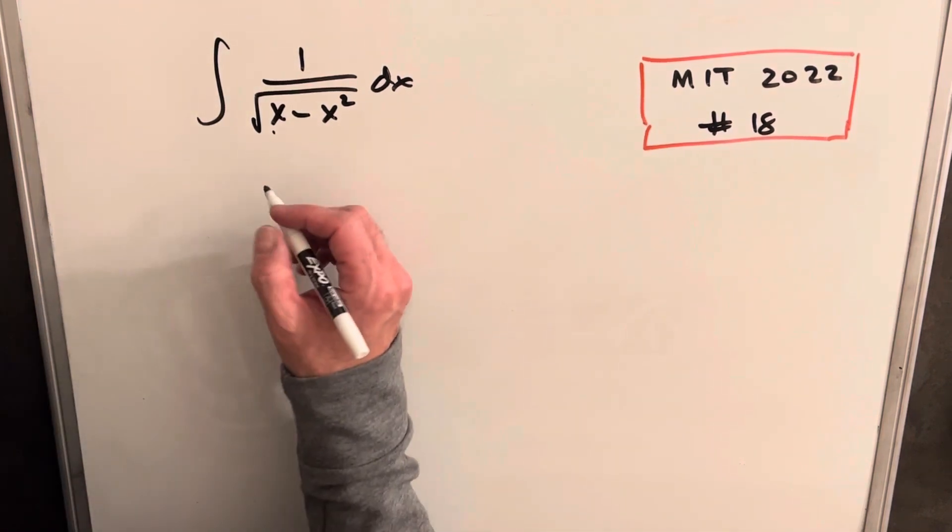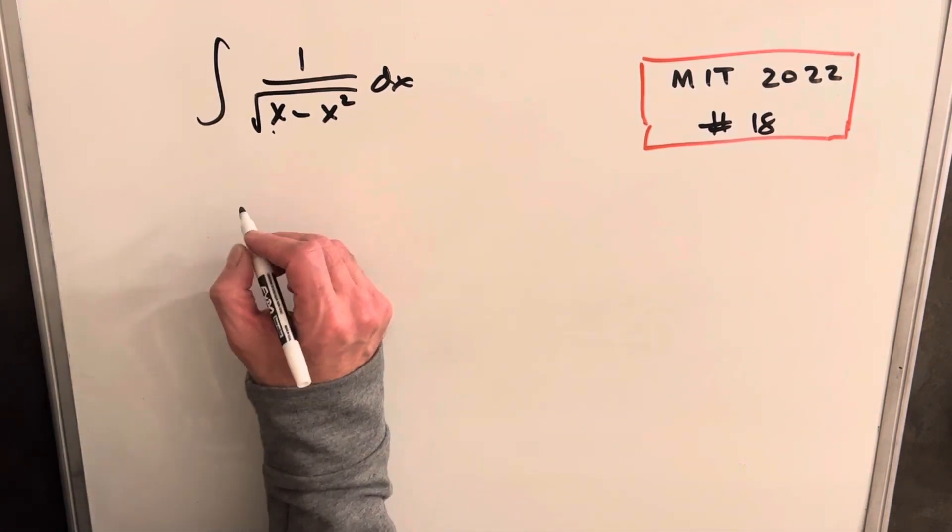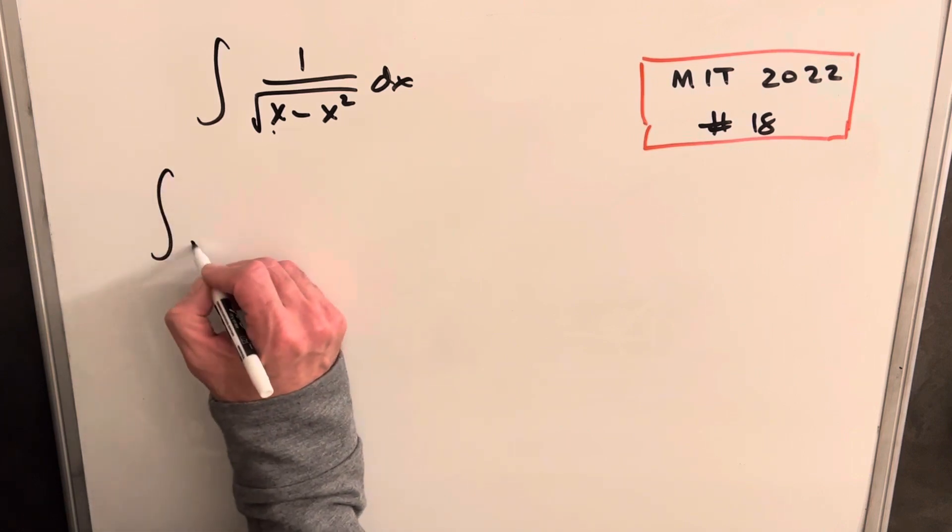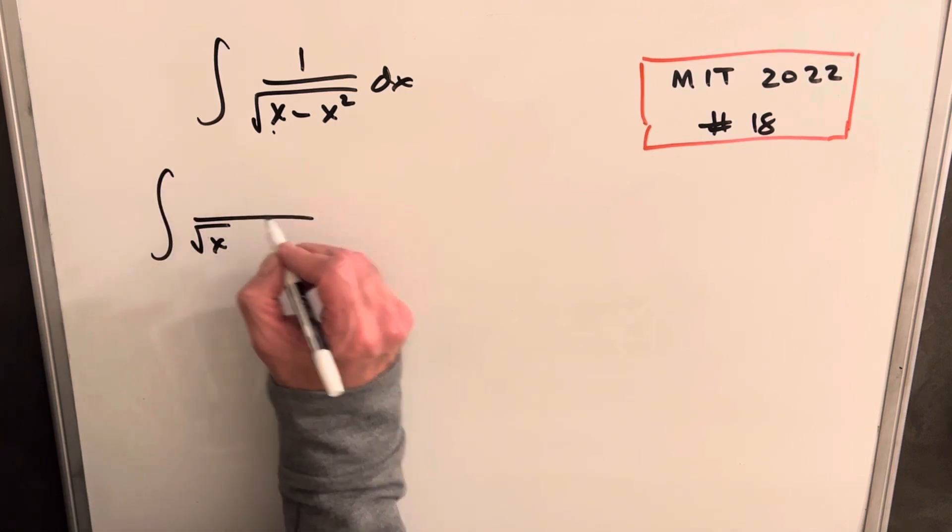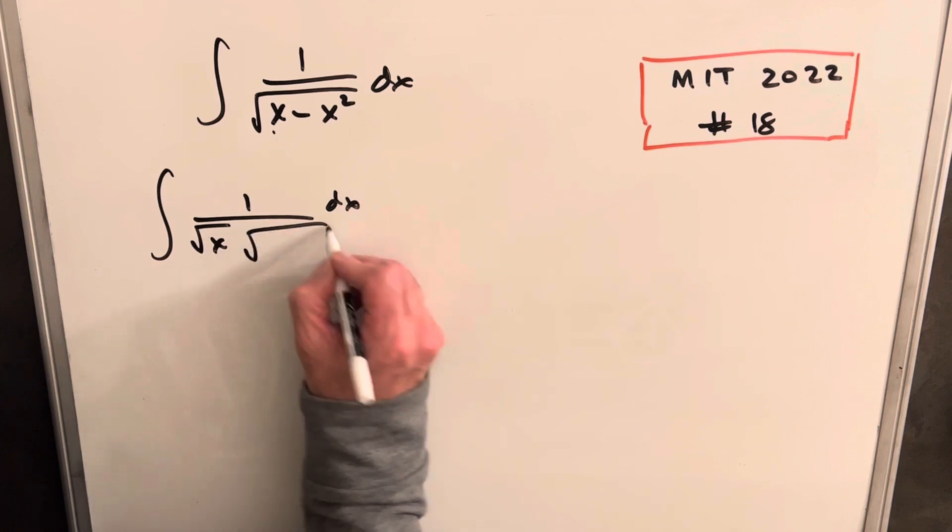So let's factor out, I think what I want to factor out is just a square root of x. So let's rewrite this with a square root of x over here. And then inside the radical, we'll just have 1 minus x.